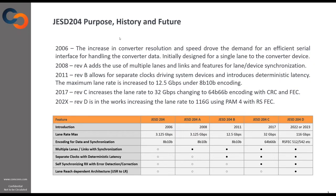JESD204 started in 2006 when the speed of converters began to rise and there was a need for serial access to data converters. At that time, the speed was 3.125 gigabits per second. The standard quickly got a revision called the A-revision, when multiple lanes were introduced with link synchronization. The B standard increased the speed, still keeping 8B10B encoding up to 12.5 Gbps, and separated clock domains between Rx and Tx devices, introducing deterministic latency.